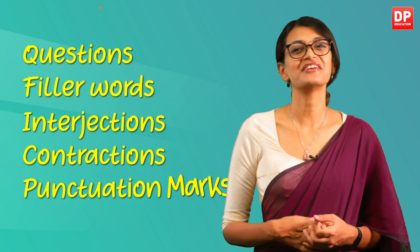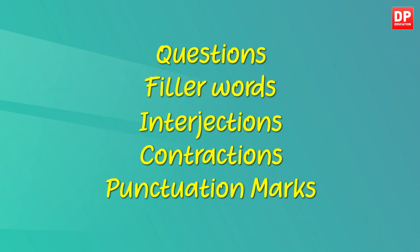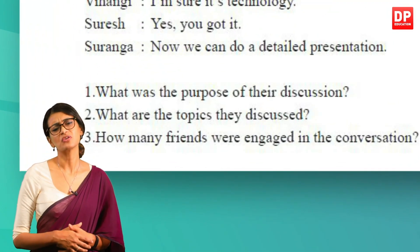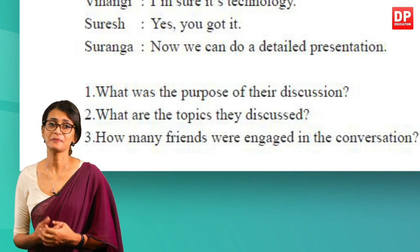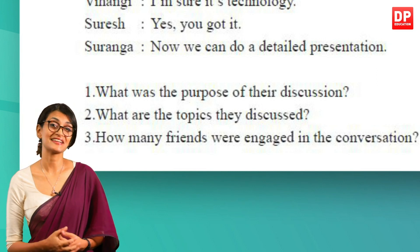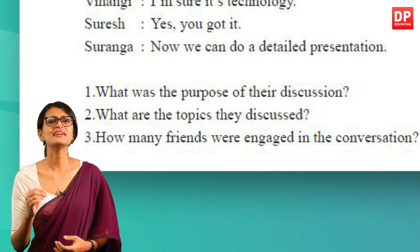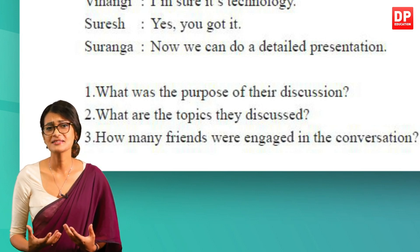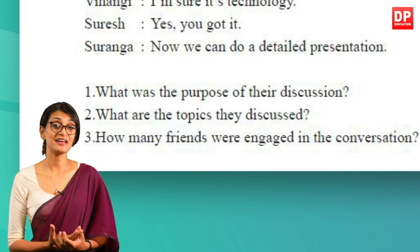You would have noticed that this dialogue is full of question marks, filler words like 'well,' interjections, contractions, and a variety of punctuation marks. All this is used to make the conversation very casual and realistic — when we talk amongst friends, we don't use sophisticated language. Let's look at the questions that follow the text. The first question is: what was the purpose of their discussion? The purpose of the discussion is given at the very end of the text — they have to do a detailed presentation of their country, the past kings, historical places, and endemic animals, birds, and trees.